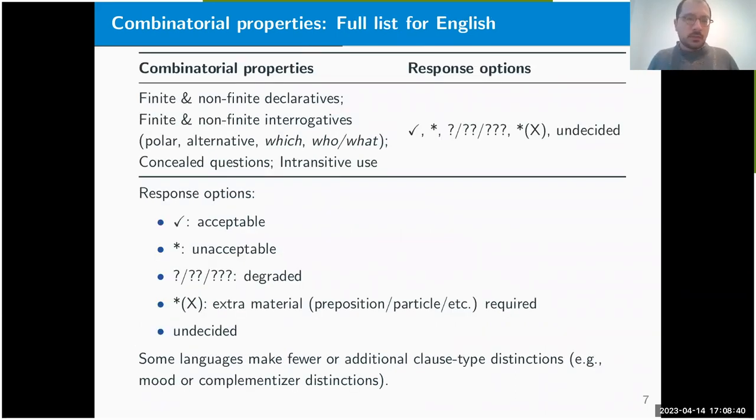Here's a fuller list of the set of combinatorial properties that we included. Two things to note about these properties: the consultants had the option of saying that a sentence was fully acceptable or completely unacceptable, as well as intermediate options, and that references the markedness of a particular sentence.